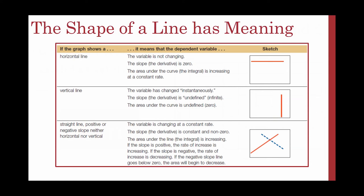For straight lines with positive or negative slope — neither horizontal nor vertical — a variable is changing at a constant rate. The slope, or derivative, is constant and non-zero. The area under the line is increasing. If the slope is positive, the rate of increase is increasing; if the slope is negative, the rate of increase is decreasing. If a negative-slope line goes below zero, the area will begin to decrease.